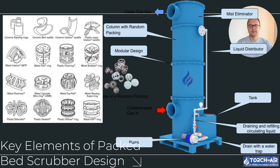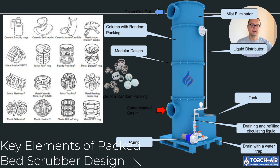Tower size: the tower's height and diameter matter. A taller tower gives the gas more time to interact with the liquid, which improves pollutant capture. But don't just go building the world's tallest scrubber — tower size also depends on flow rates and the specific pollutants you're dealing with. It's all about finding that balance.